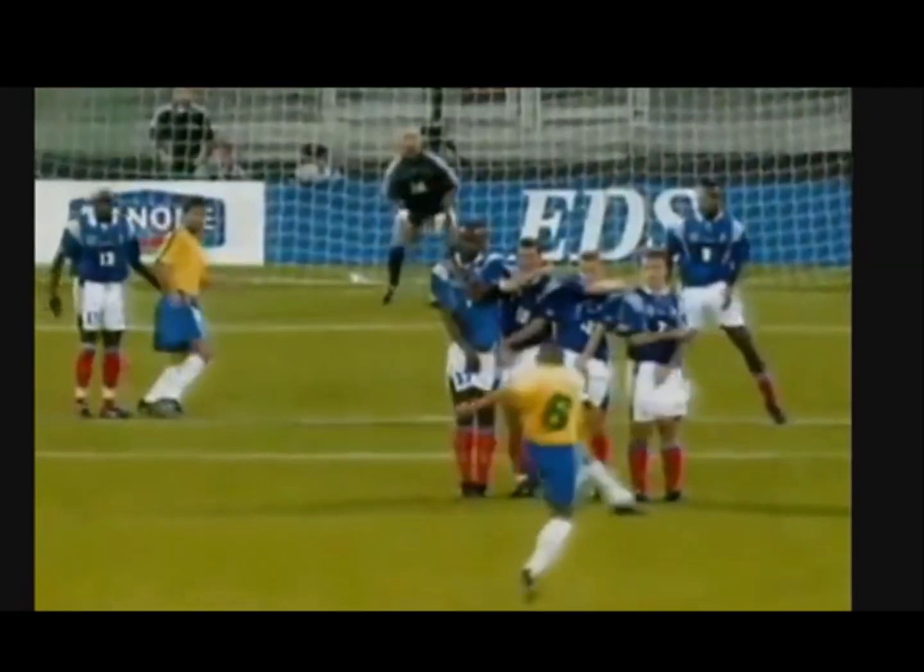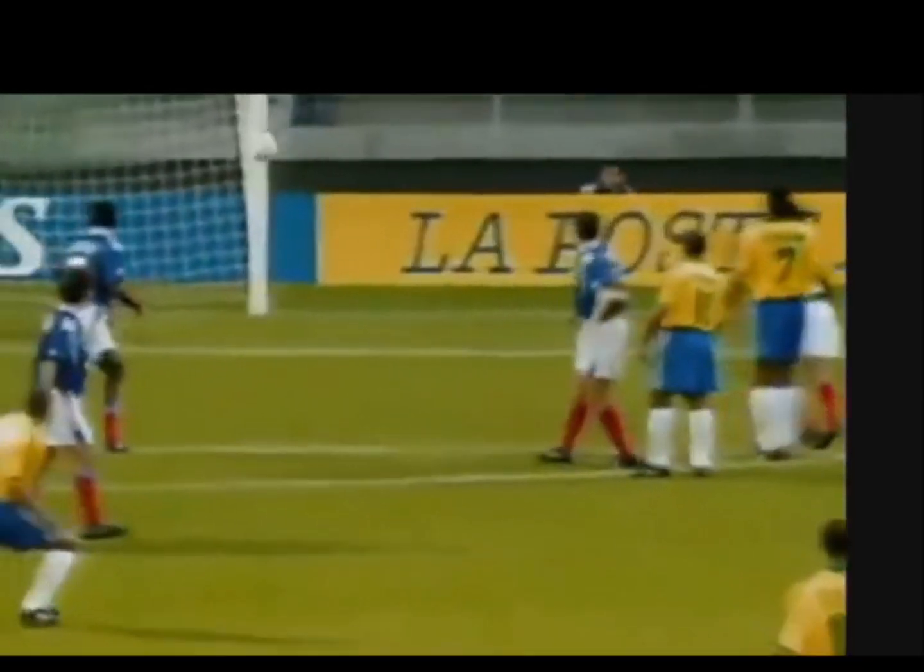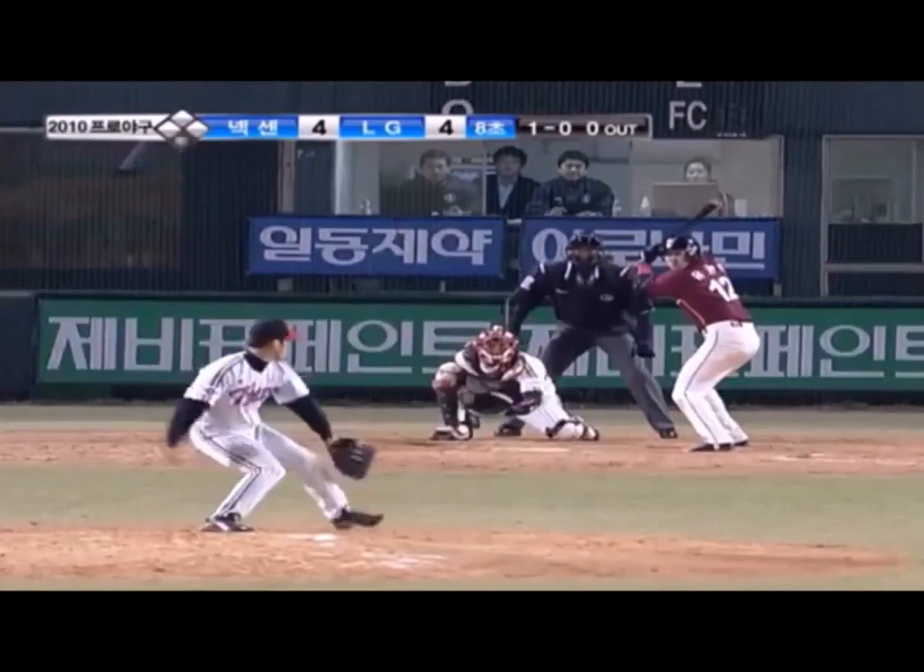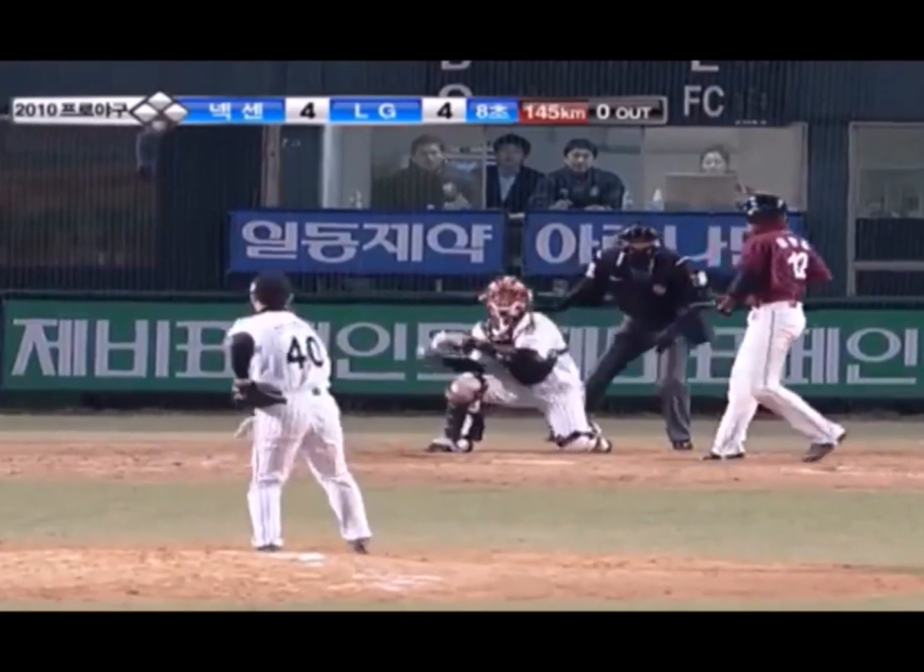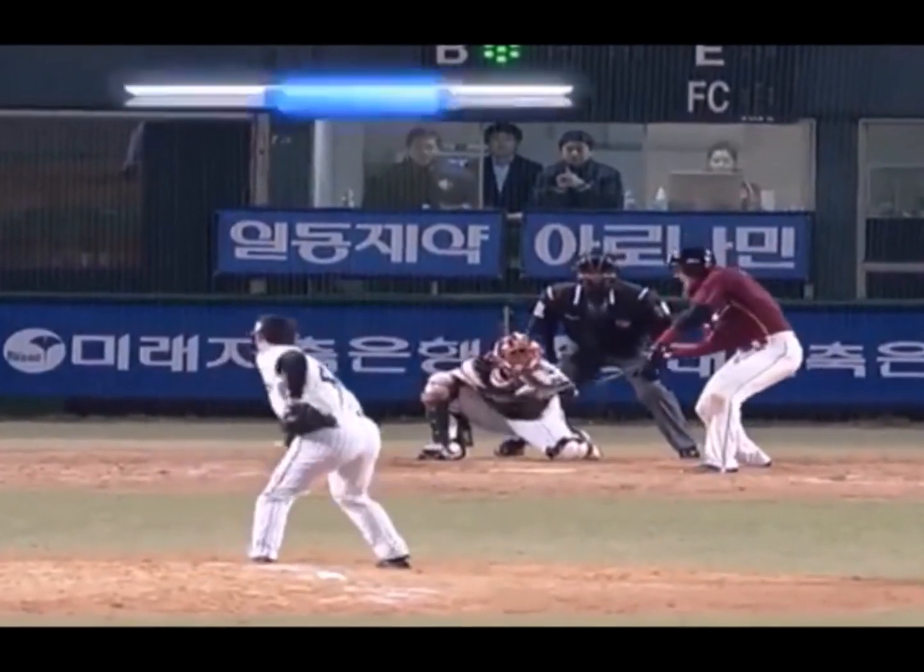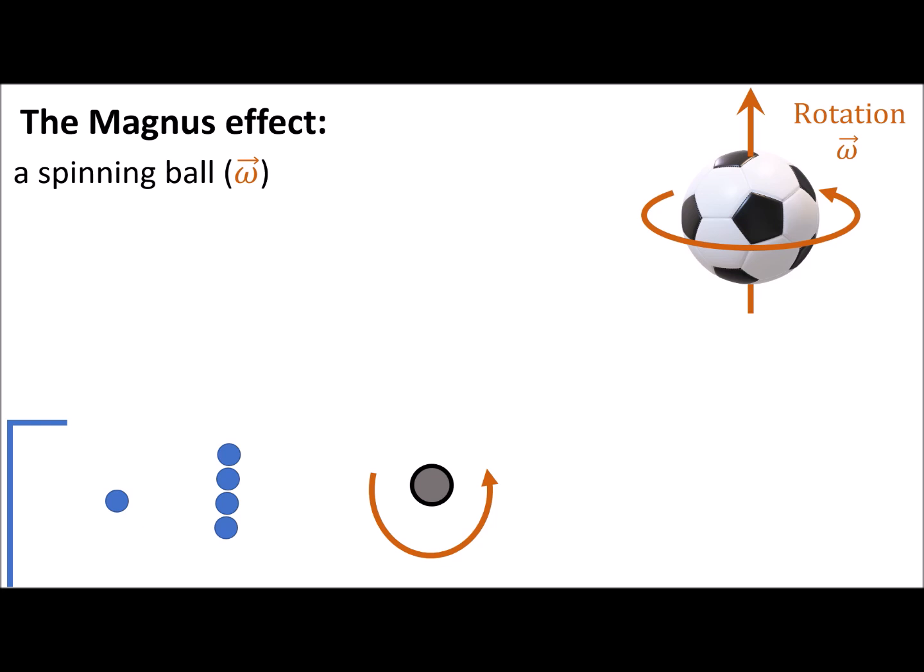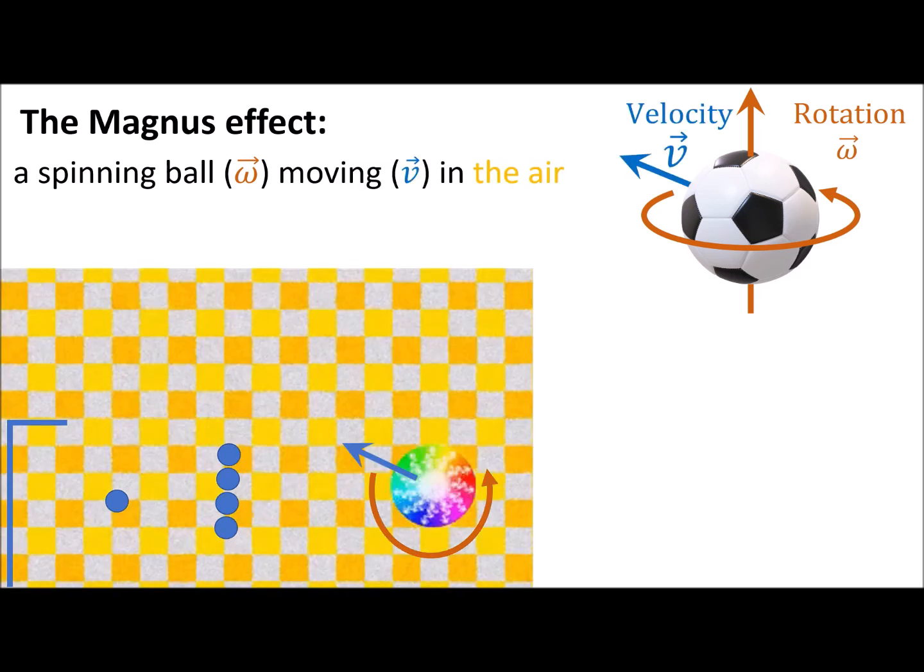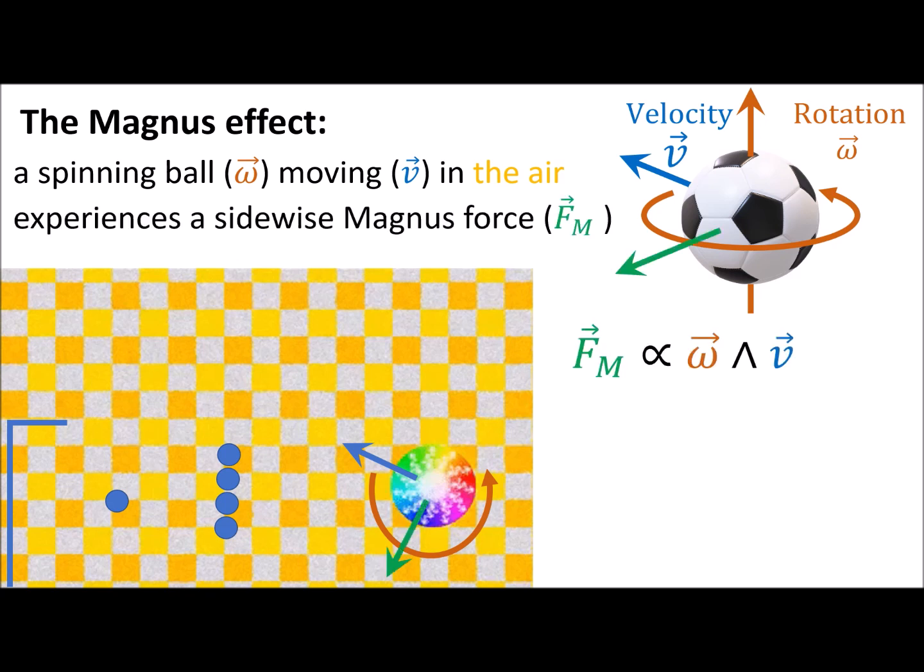The Magnus effect, giving rise to curved trajectories, is well known in sport balls like soccer or baseball. The Magnus effect occurs when the spinning axis of a ball is perpendicular to its velocity as it propagates in the air.